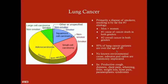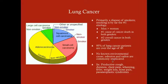95% of lung cancer patients are over the age of 45, because you need considerable exposure to smoke to develop it. As for environmental causes, asbestos and radon are commonly implicated, but there's no known environmental cause that has been demonstrably proven to be associated with lung cancer. Symptoms are usually diagnosed late in the course: productive cough, dyspnea, chest pain, wheezing, fever, and weight loss.